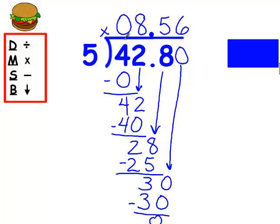I want you to notice that for every number in my dividend, there's a number in my quotient. Notice how I line them up.